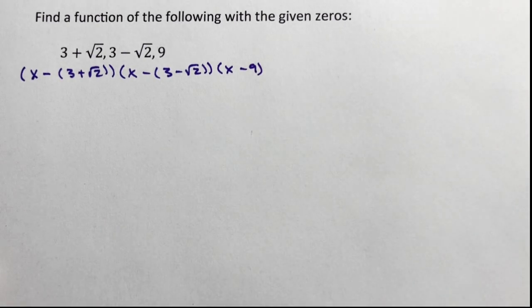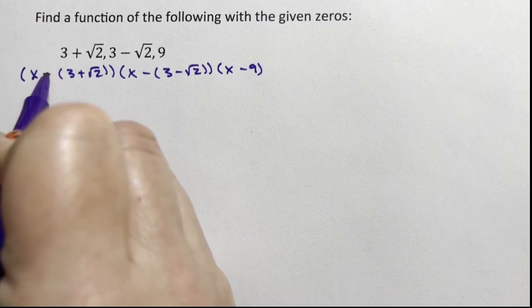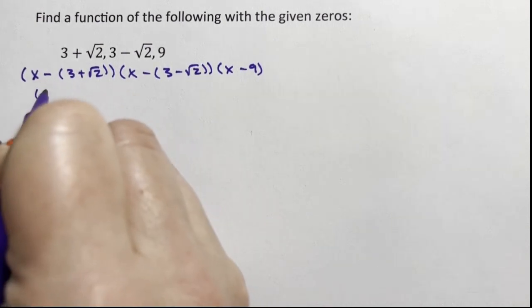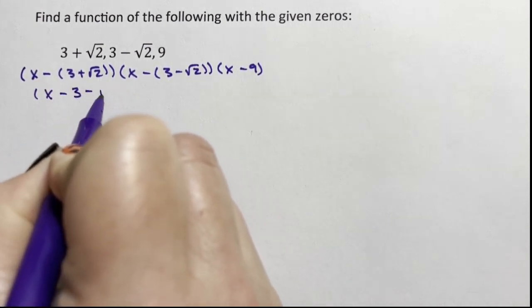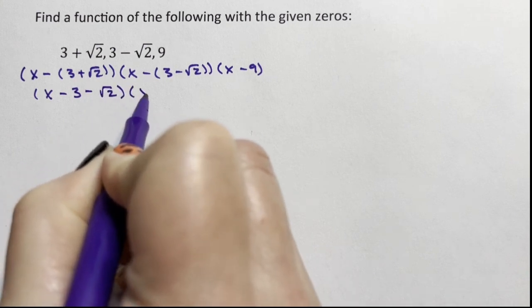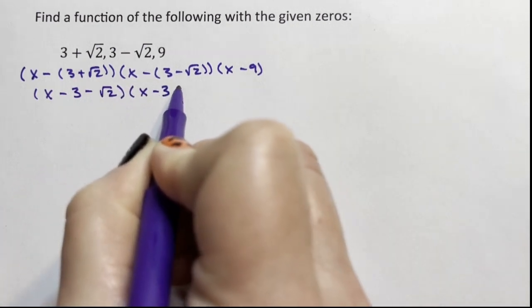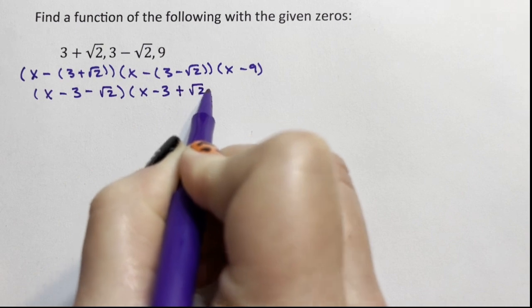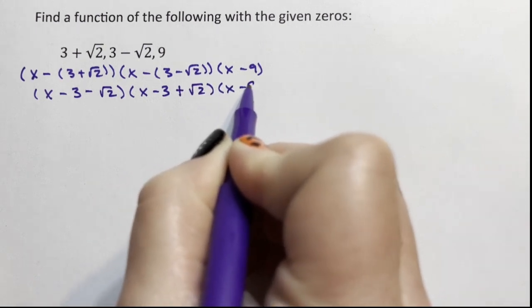So you can already see that this is getting more complicated. I'm going to distribute that negative in, so I have x minus 3 minus the square root of 2, x minus 3 plus the square root of 2, x minus 9.